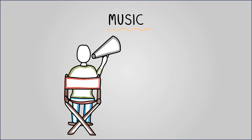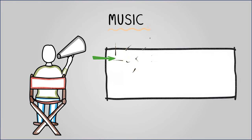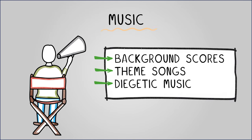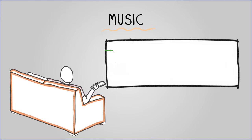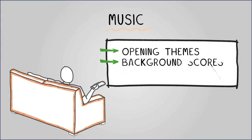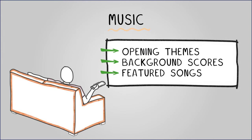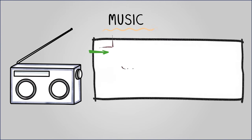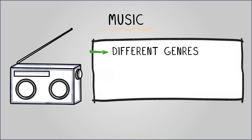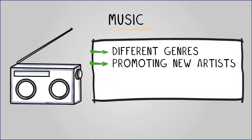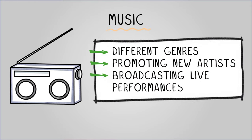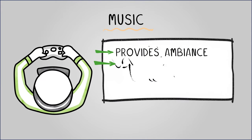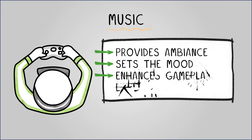In film, music provides emotional depth and sets the tone through background scores, theme songs, and diegetic music. TV shows use music for opening themes, background scores, and featured songs to enhance storytelling and atmosphere. Radio focuses primarily on music, with stations dedicated to playing different genres, promoting new artists, and broadcasting live performances. In computer games, music provides ambience, sets the mood, and enhances gameplay experiences.